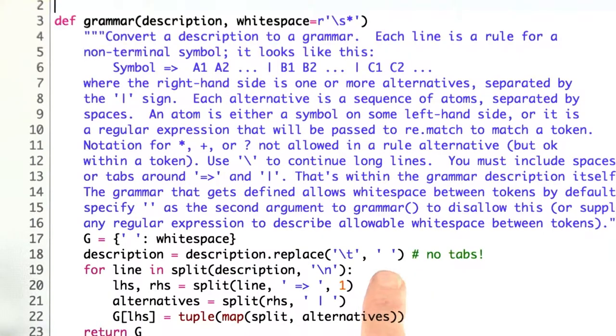Third, I've added one more statement here which says if there are any tabs in the input, replace them with spaces. Why did I do that? Notice that I'm splitting here on arrow surrounded by spaces and an OR bar surrounded by spaces.